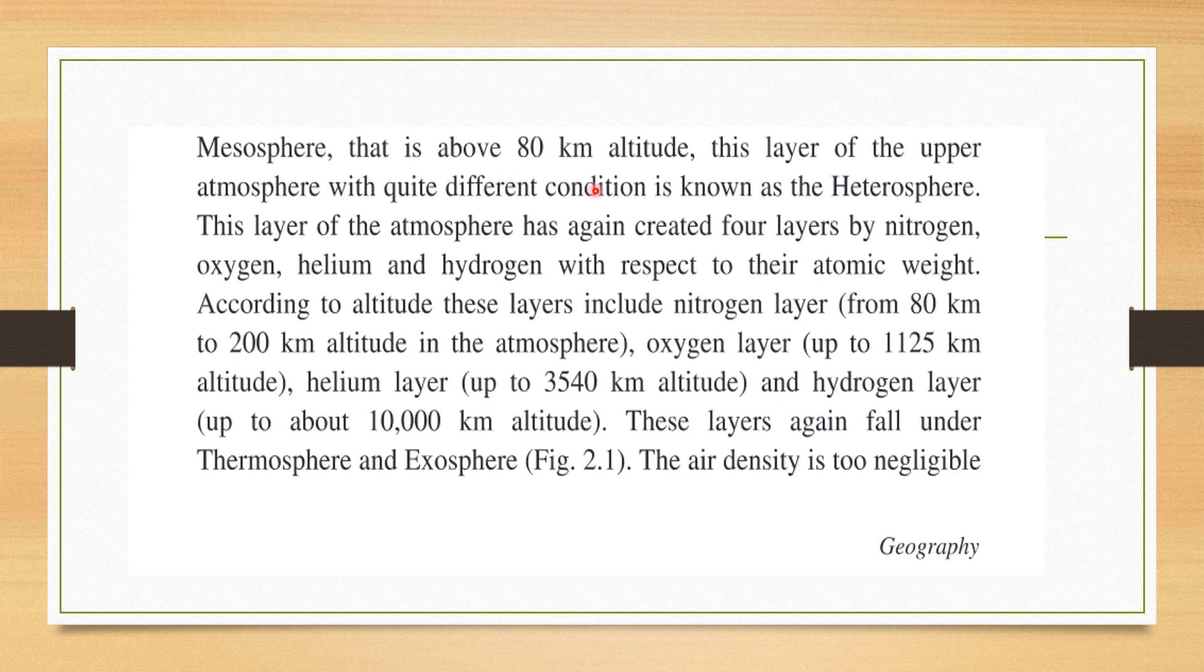After mesosphere we have already seen heterosphere comes. In this heterosphere region we have another four layers which have been created by nitrogen, oxygen, helium, and hydrogen with respect to their atomic weight. The lightest gases are at the top. According to the altitude, these layers include nitrogen layer. So these are, you have already seen in the diagram. So let us not go into this detail. These layers again fall under thermosphere and exosphere.